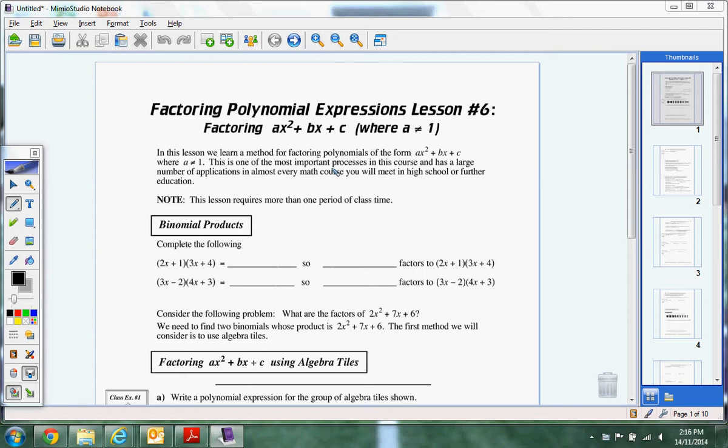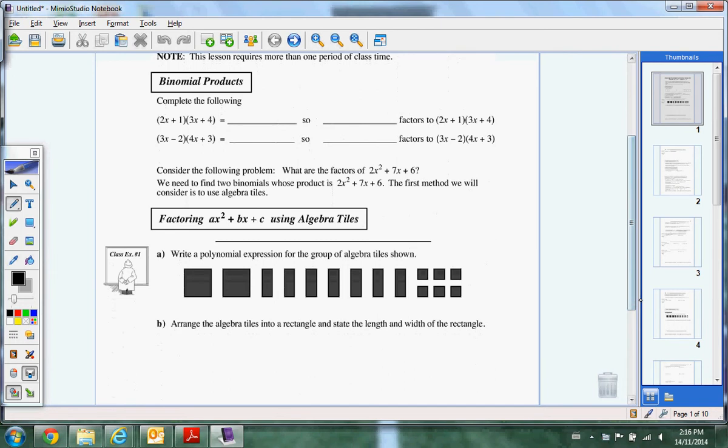Real quick, I'll let you kind of do this on your own. Just go ahead and foil those out and just kind of see what you get, just giving you that pattern of what to expect. What we're trying to do is we're trying to take this piece and this piece and bring it back to here, to the factoring.